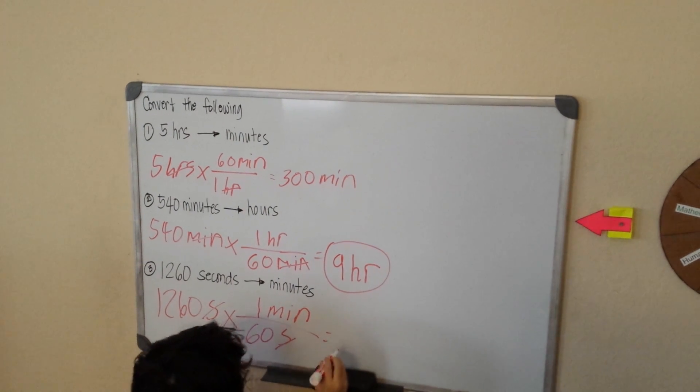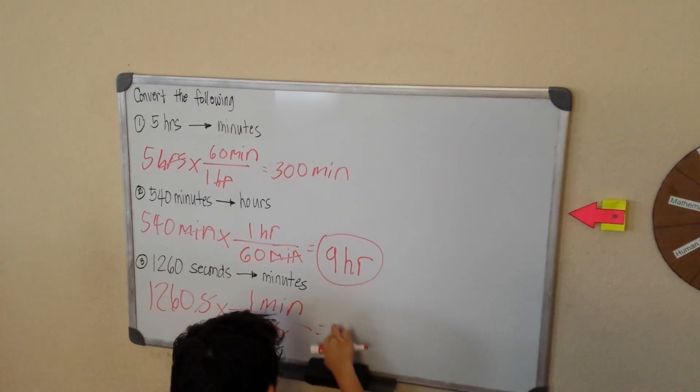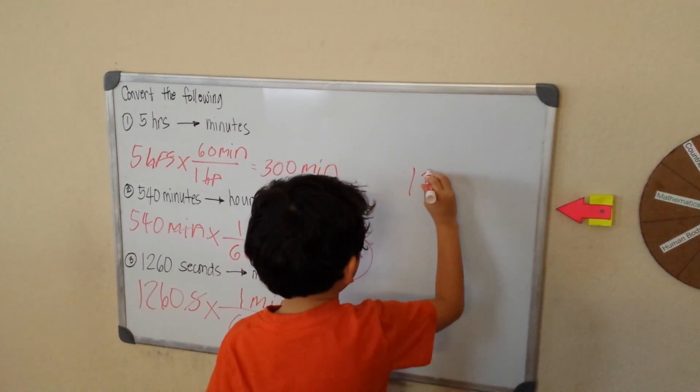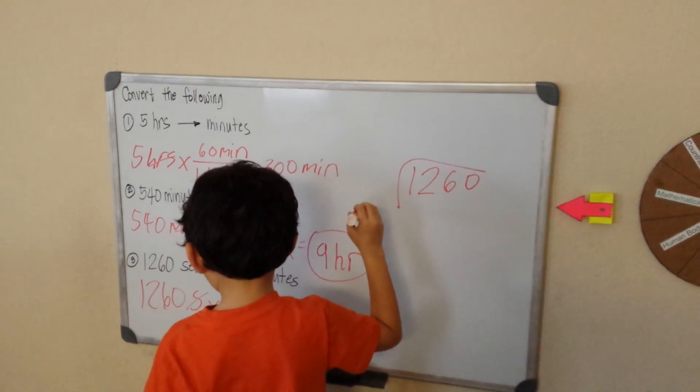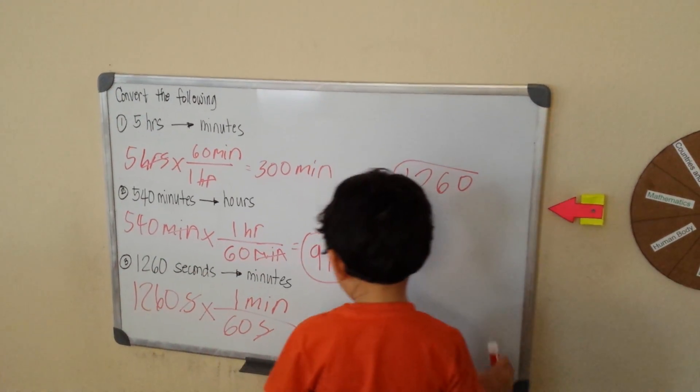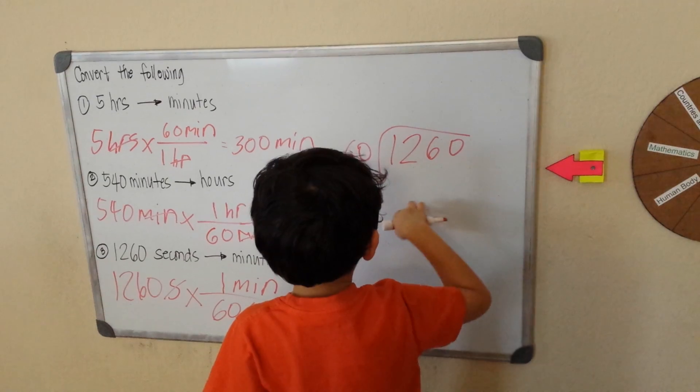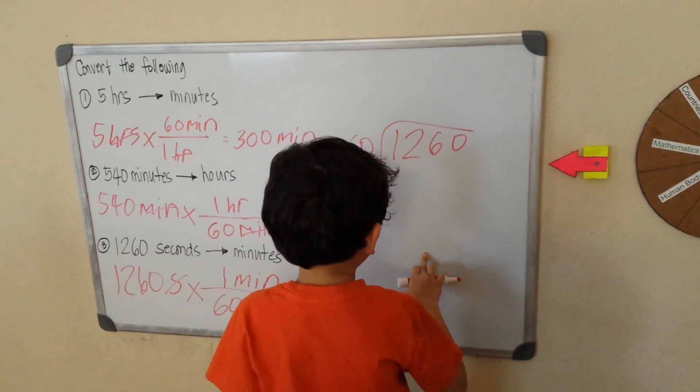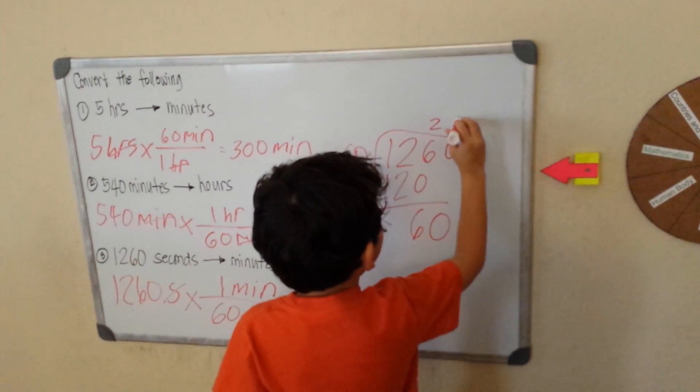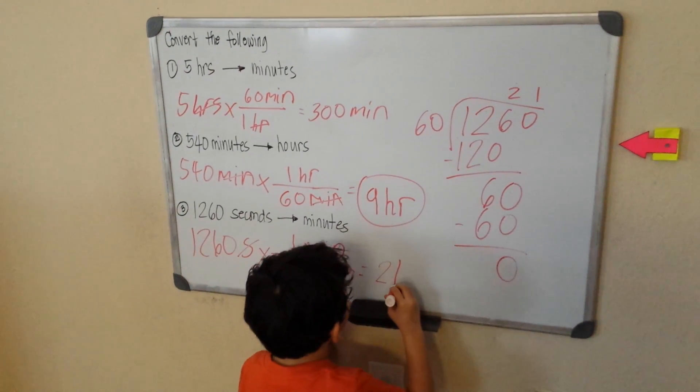So we can divide these two, so that equals... It's okay if you don't want to put the division. Let me check this one, right here. Divide by what is that, 60. That will divide 60. Understand? So I think this one could be 2. 2 times 60 is 120. That will be 6, that will be 1, 60, 0. That will be equal to 21 minutes.